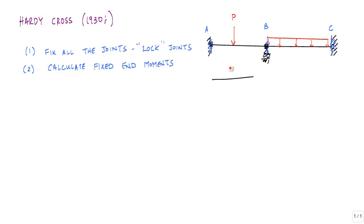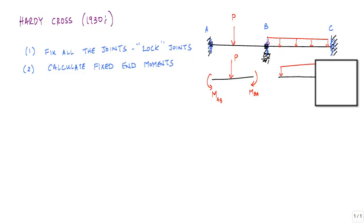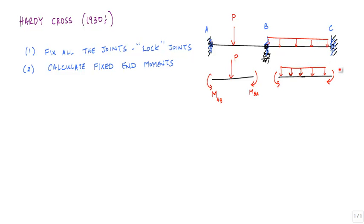Since both ends are fixed, I would have a moment here and a moment here, which I can calculate from charts. I'll call these M-AB and M-BA. The same thing with member BC — using whatever basic charts are available with pre-calculated fixed end moments, we calculate those moments. So I'll call them M-BC and M-CB. These would all be numbers. And that's the lock.